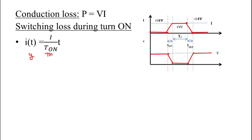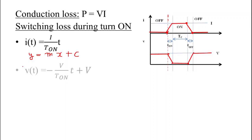Here y equals m into x, where x equals t and m is the slope. Slope equals perpendicular upon base, where the perpendicular is I and the base is T_on. The base is T_on because we take the red dotted line as the reference vertical axis. So slope equals I by T_on, and the y-intercept c equals zero since we take that axis as reference. So the current equation is: i(t) = (I / T_on) × t.